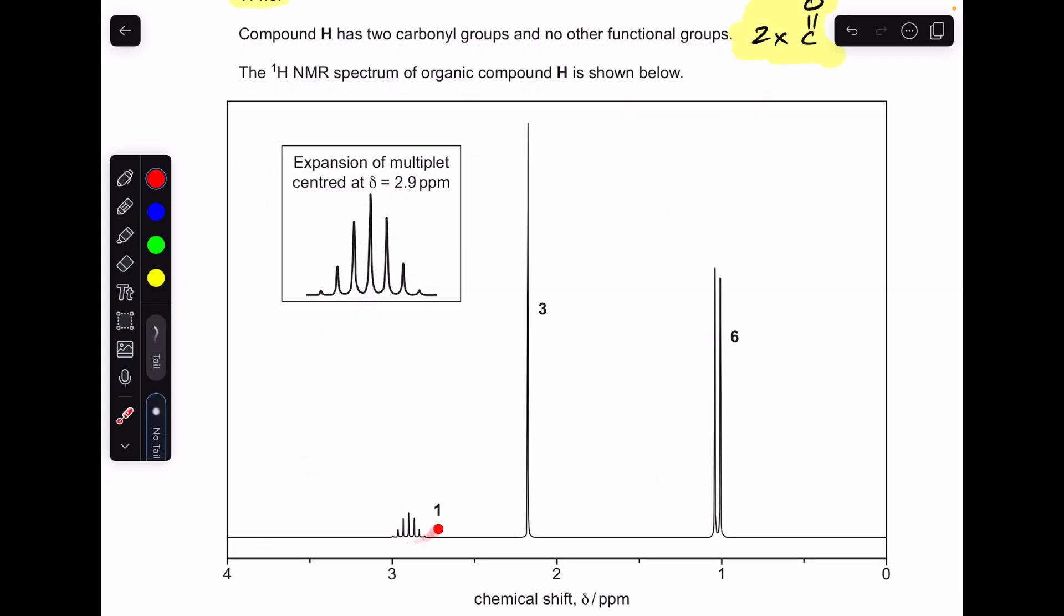Moving on to this final signal now. We've got the expansion here so we can see how many signals we've got. You can see there's seven peaks here. So this is a heptet. That means there's two adjacent CH3 groups—six plus one gives you the seven. The area of one means there's just one hydrogen causing this signal.